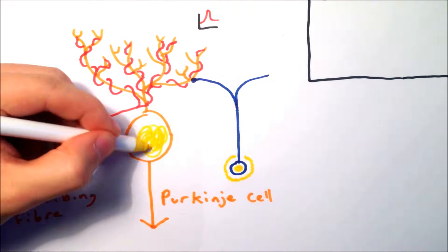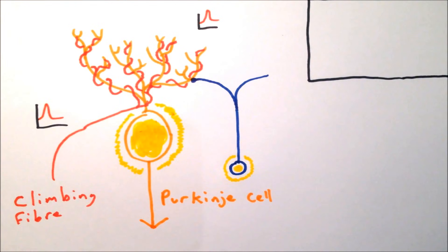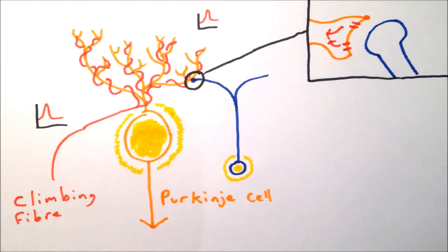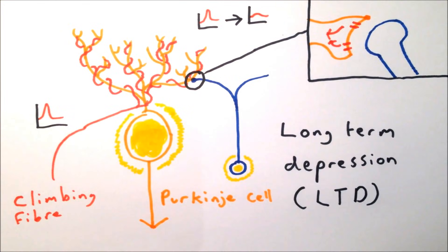When a parallel fiber synapse and a climbing fiber synapse are both active at the same time, this triggers biochemical changes within the Purkinje cell, which causes it to internalize glutamate receptors from the parallel fiber synapse. This reduces the strength of the synapse between the parallel fiber and the Purkinje cell.